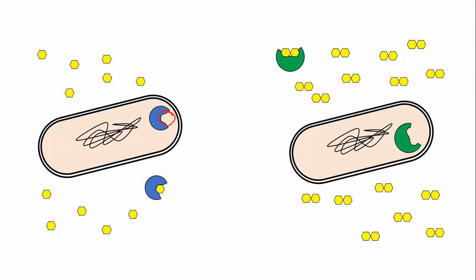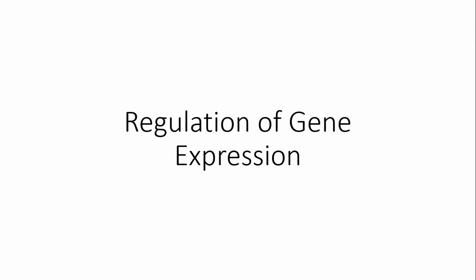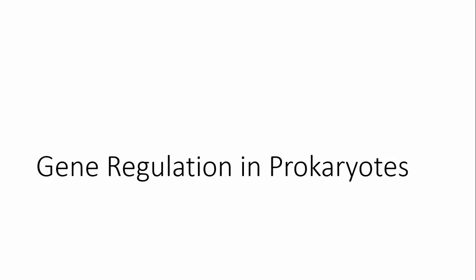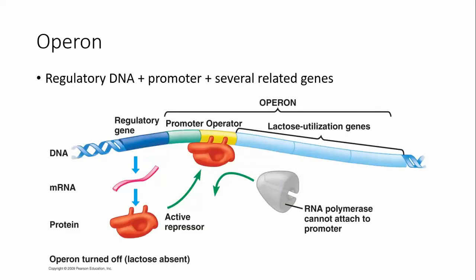Similarly, every single organism on the planet has to regulate how its genes are expressed. And this can range from fairly simple — which we'll look at first in prokaryotes — to pretty darn complex, which we'll look at in eukaryotes next. So prokaryotes have a bit of a shortcut to being able to control their genes.